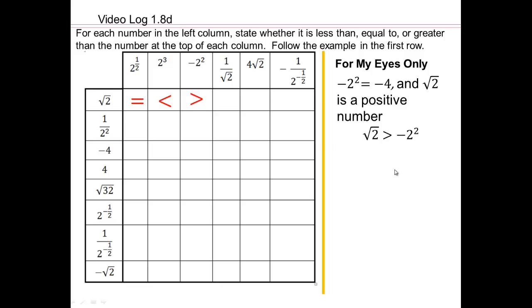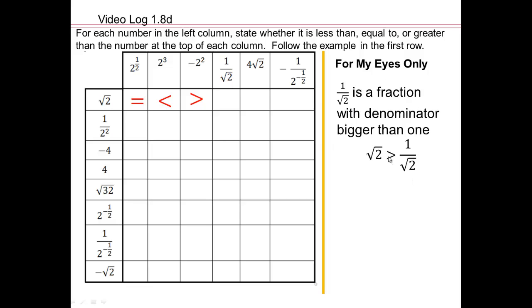What about 1 over square root 2? 1 over square root 2 is a fraction with denominator bigger than 1, which means that 1 over something bigger than 1 is point something. And we already know square root 2 is 1 point something. So square root 2 is bigger than 1 over square root 2.